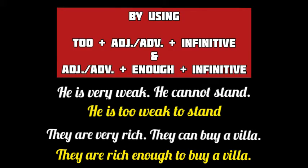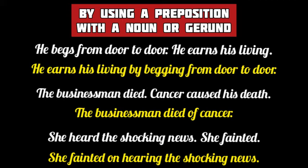We may also use the structures of 'too' and 'enough' with an infinitive to combine two simple sentences. We combine them using the structure: adverb 'too' plus adjective plus infinitive, where the infinitive is used in place of the sentence that shows the result or consequence. He is too weak to stand. And then: 'They are very rich' and 'they can buy a villa' — the second sentence shows the consequence, so it will be changed into an infinitive using the structure adjective plus 'enough' plus infinitive: They are rich enough to buy a villa.